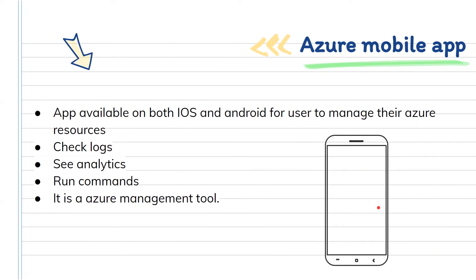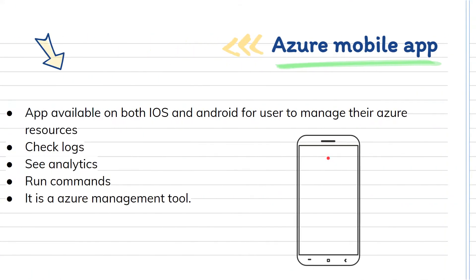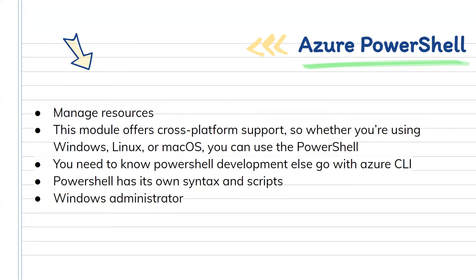If you need to do large and repeatable tasks, we move to PowerShell or CLI. For just viewing the dashboard or visualizations, the Azure mobile app or Azure Portal are good options. But if you want to create 100 virtual machines at once, upload a huge amount of data, or deploy 100 dev test labs via script, you cannot do that efficiently through the portal — logging in and creating things one by one is not good for enterprises.